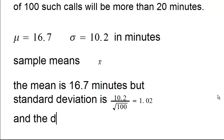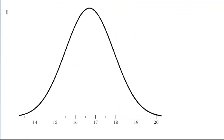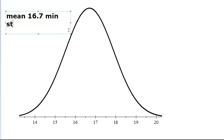The distribution of the sample means is approximately normal. So we now have a normal distribution with a mean of 16.7 minutes and a standard deviation of 1.02 minutes.